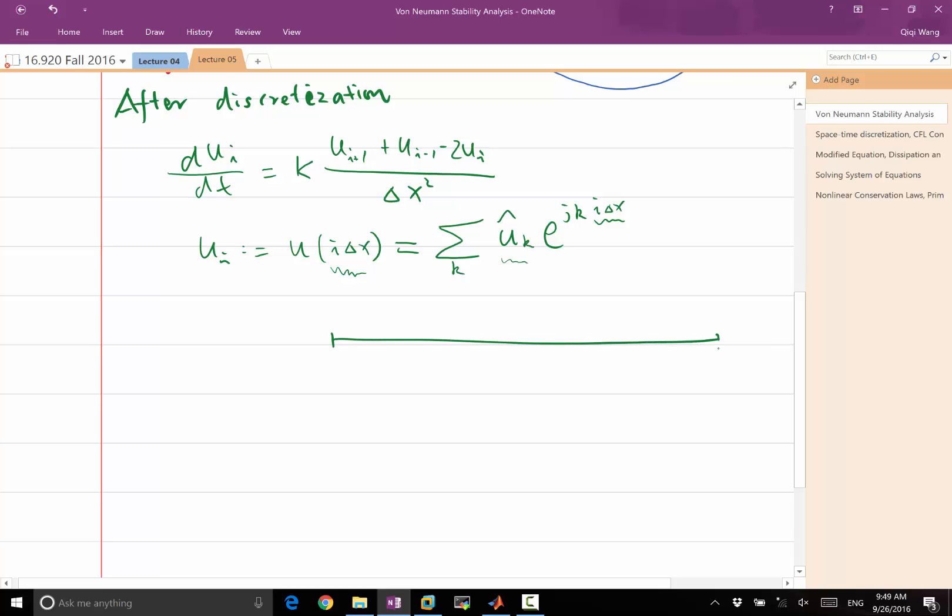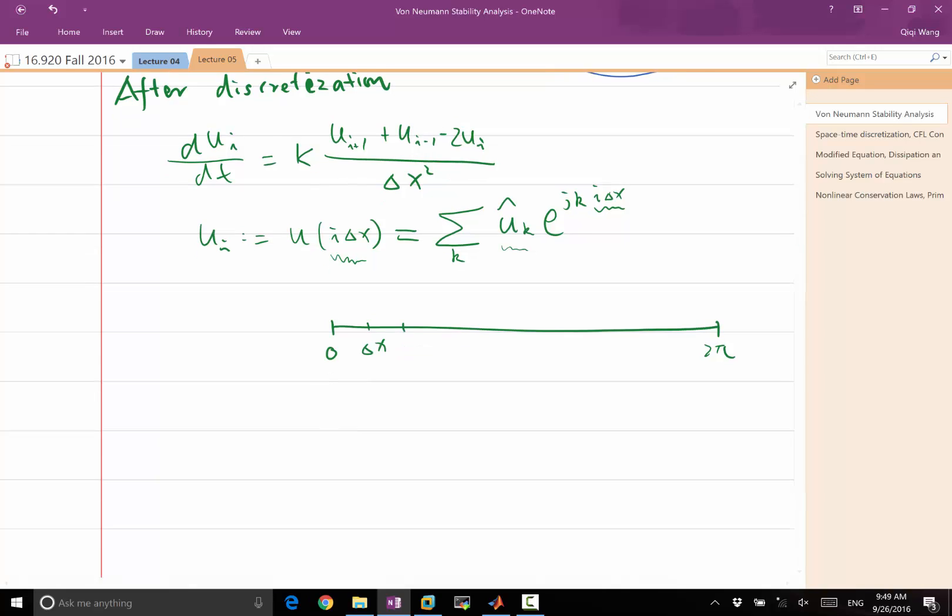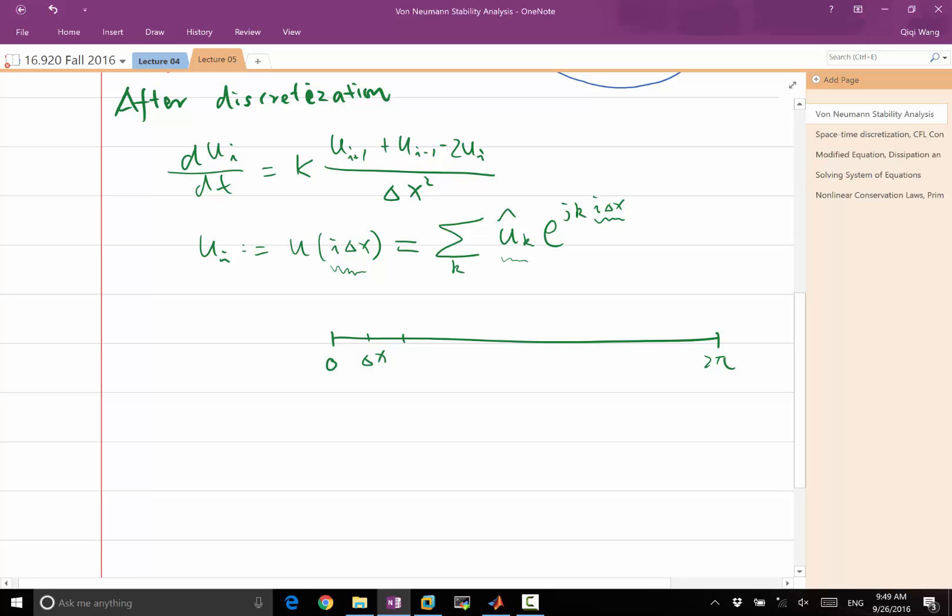Let's imagine we have a discrete grid that is 0, delta x, etc., all the way to 2 pi. The question, intuitively thinking, if I have one Fourier mode, that is exactly one period, so that is k equal to what? 1 or minus 1, right?